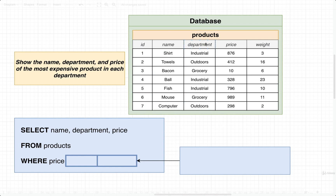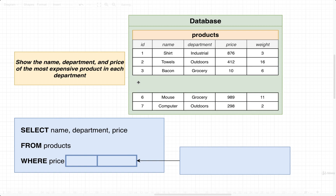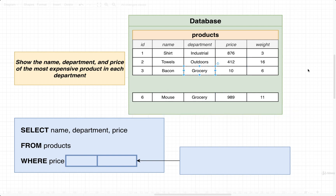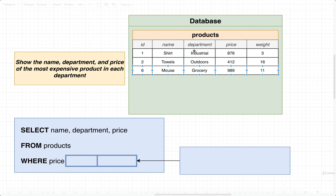We would probably want to find all the unique departments to get started. It looks like the only departments we have are industrial, outdoors, and grocery — all the others are repeats. We would then look at each department one at a time, starting with industrial, and try to find the most expensive product. Comparing 876 versus 328 versus 796, the first is the most expensive. Then outdoors at 412 versus 298, we'd keep 412. Finally grocery at 10 versus 989, we'd keep 989. We only want to see each department one time, with the product having the greatest price.